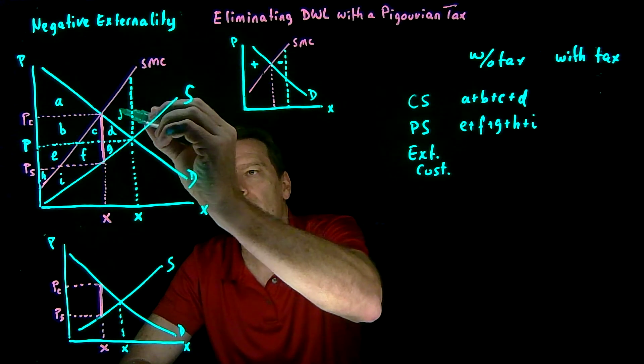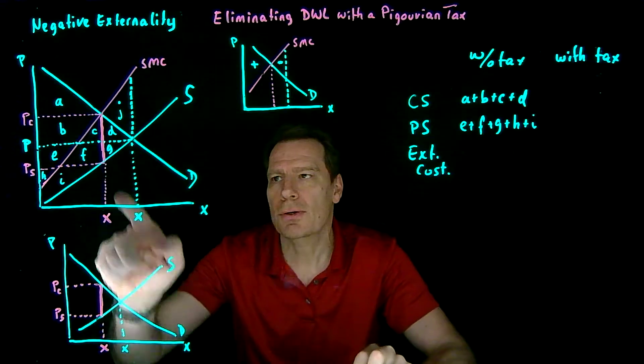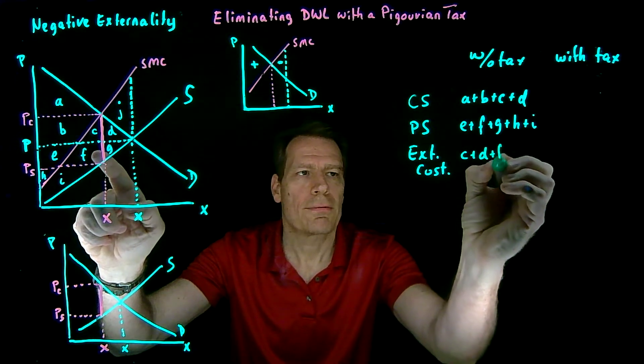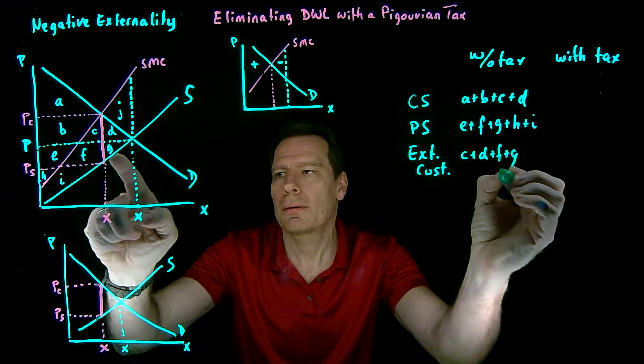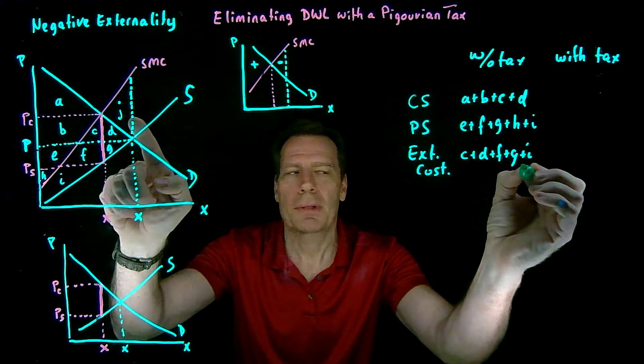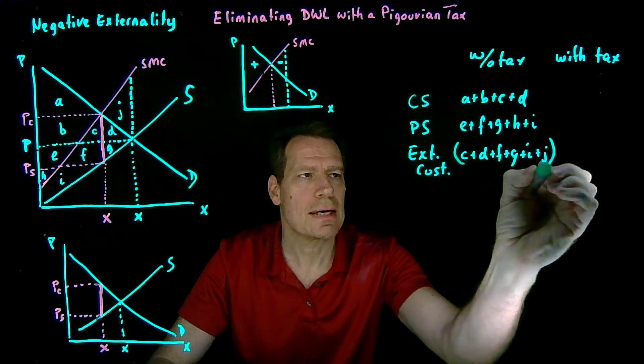So we have to include this area as well. So J is included as well. So the externality cost is then C plus D, F plus G, plus I, plus J. And all of that is a cost, so that's negative.